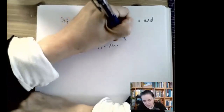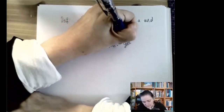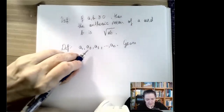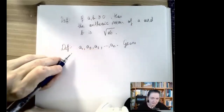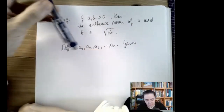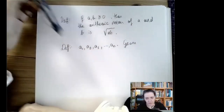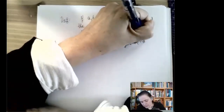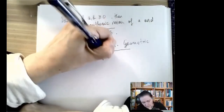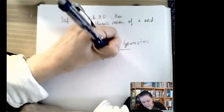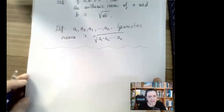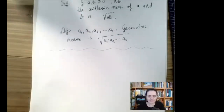More generally, if we have n numbers a₁, a₂, a₃, ..., aₙ, the arithmetic mean is (a₁ + a₂ + ... + aₙ) divided by n. The geometric mean is the nth root of the product of all these numbers — the nth root of a₁ × a₂ × ... × aₙ.